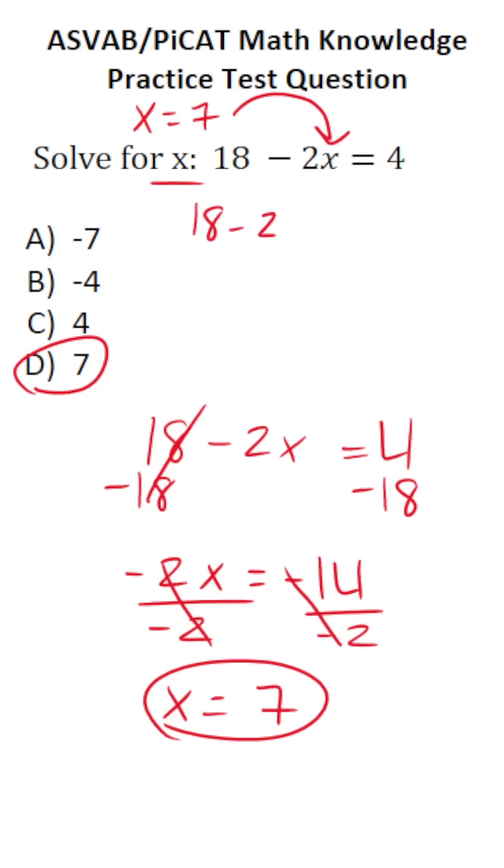This becomes 18 minus 2 times 7 equals 4. This becomes 18 minus 14 equals 4. This is 4 equals 4. Since this is a true statement, we know that we solved this one correctly.